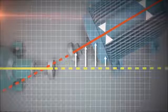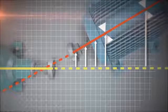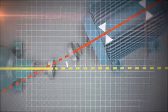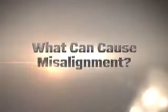What is misalignment? Misalignment means you have too much offset and angularity between two shaft center lines of rotation. What can cause machine misalignment?